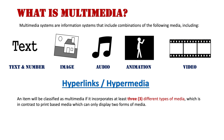An item will be classified as multimedia if it incorporates at least three different types of media, which is in contrast to print media which can only display two forms — text and image. When you pick up a piece of paper it can't have audio, it can't have animation, can't have video, and it can't have hyperlinks, but it can have text and image. So to be multimedia you've got to have at least three, meaning you've also got to have animation or video and so on.